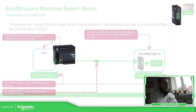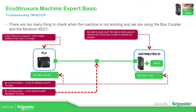The first thing that we need to check: if you're using Modbus TCP, we need to check if the bus coupler is configured as Modbus TCP or EtherNet/IP. That's something that we need to check on the PLC side.